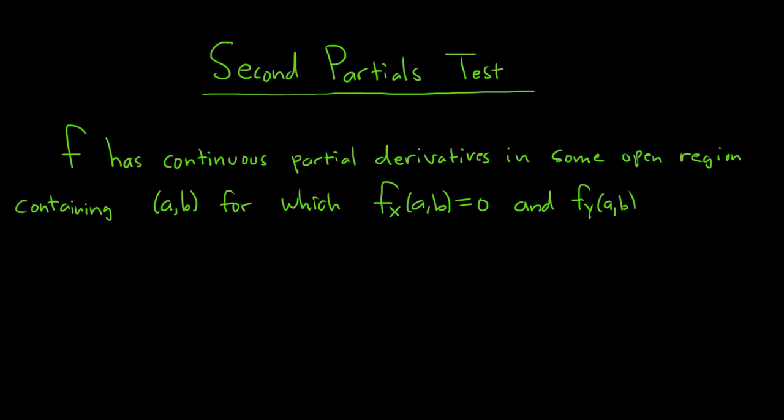When you're using the second partials test, your first step is to take the first partial derivatives, set them both equal to zero, and solve. That's how you get your (a, b).